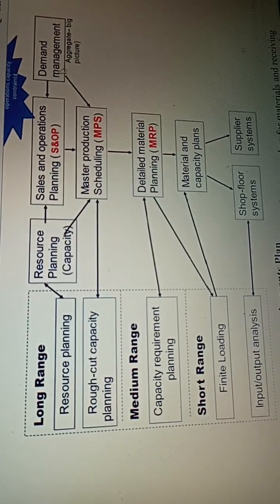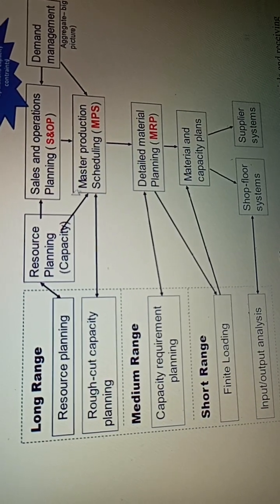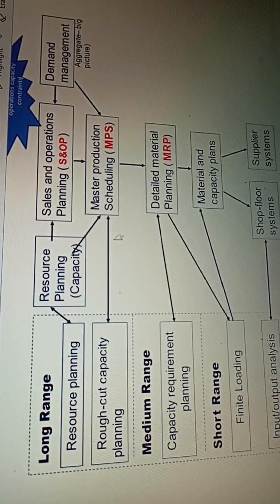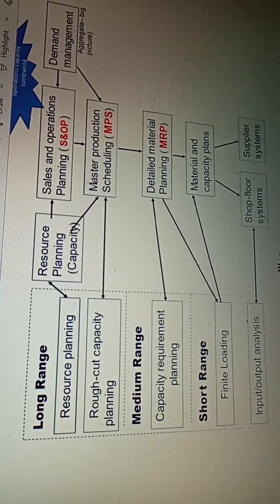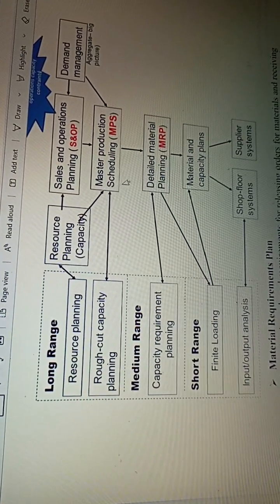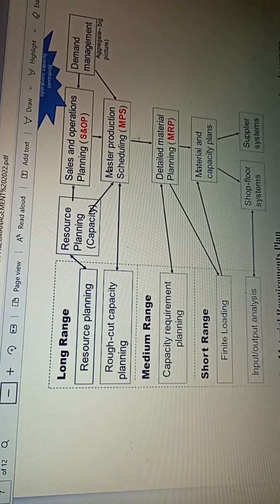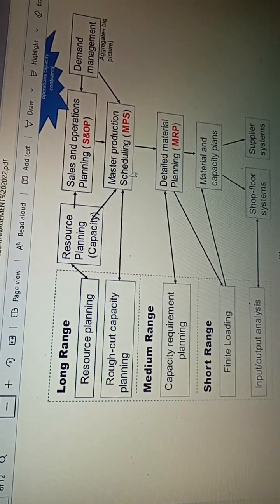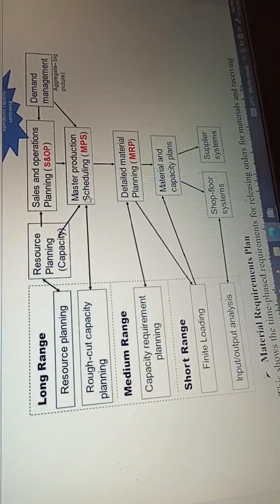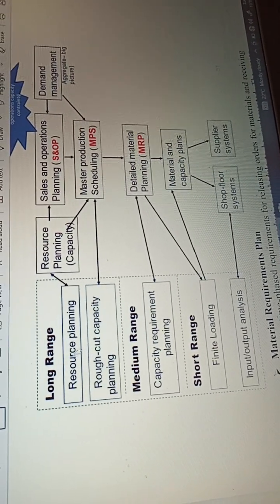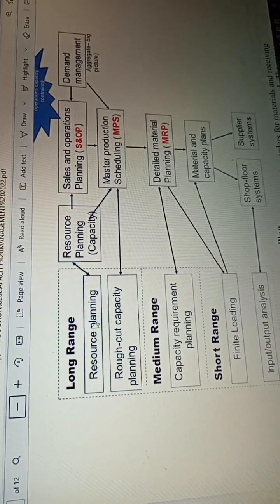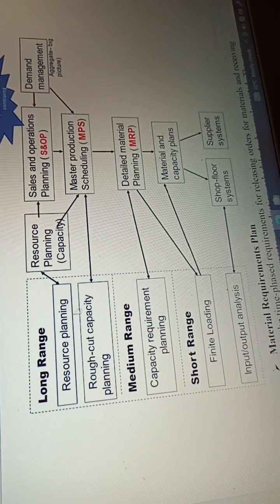Demand management correlates with the master production schedule. You are looking at specifically what the people want. For example, if I have a company producing chapatis and fried eggs, I look at what people actually want in a specific market. If they want chapatis, then through the master production schedule I focus specifically on those chapatis. And through resource planning, I ask: do I have the resources required for chapatis and eggs? Yes, I have the eggs, I have the wheat — that is the long-range resource plan.